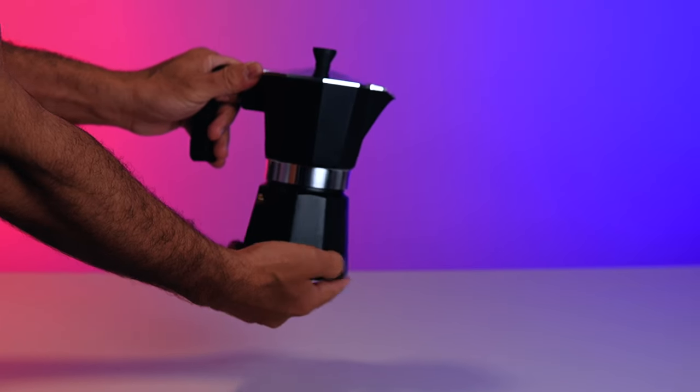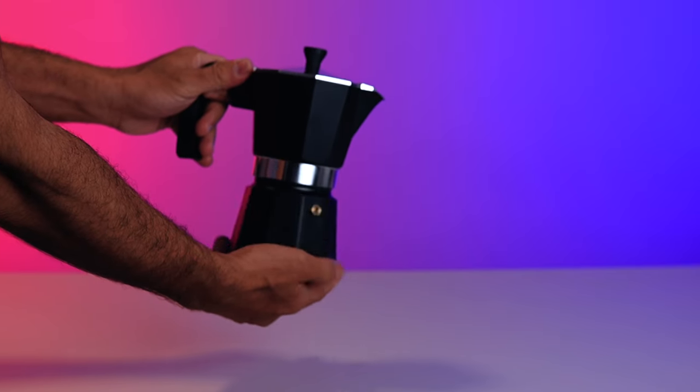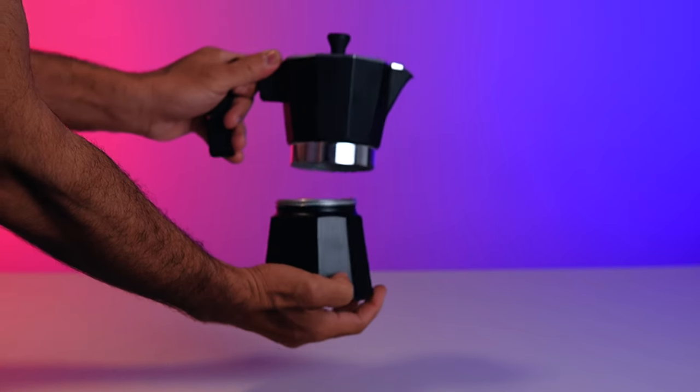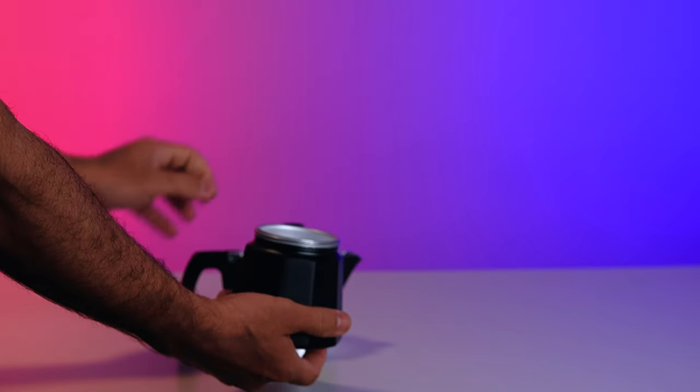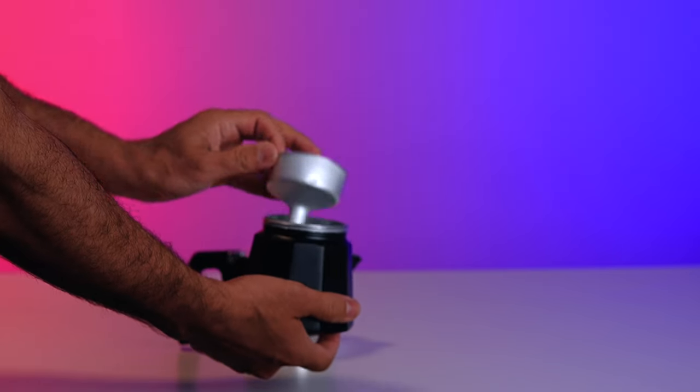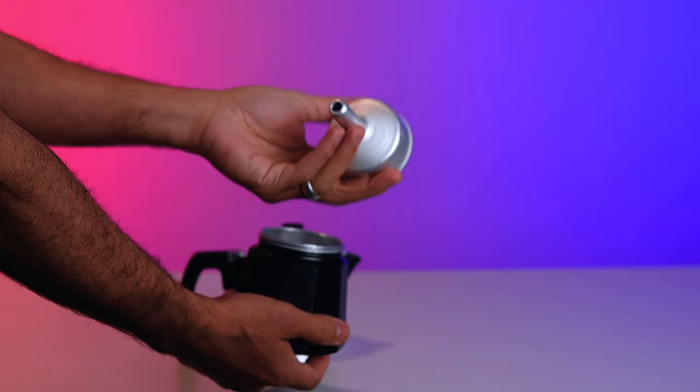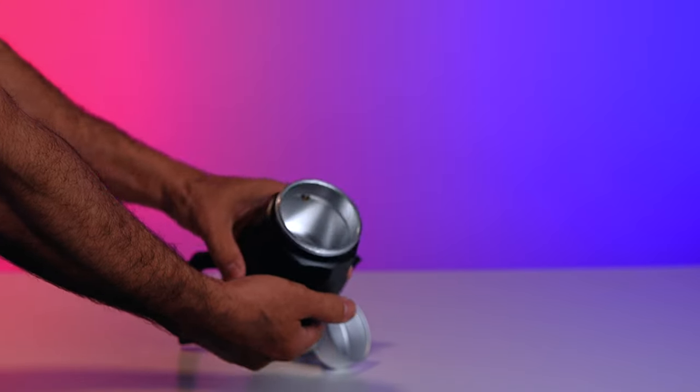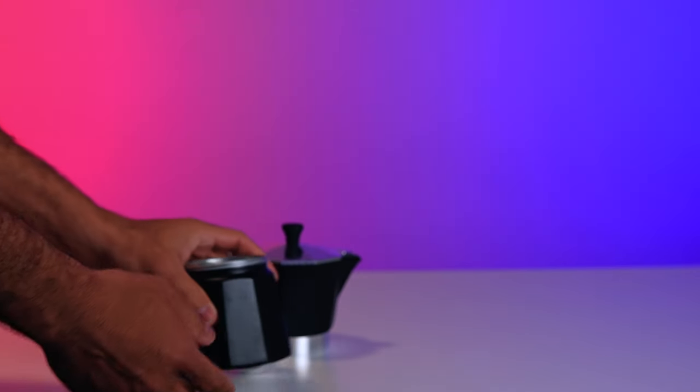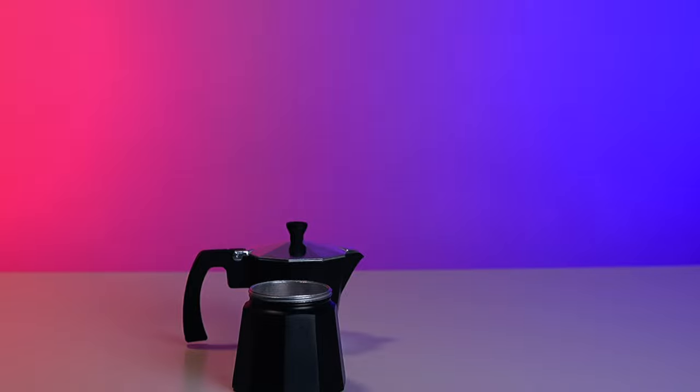But the Milano isn't just about looks, it's all about performance. With its high quality construction and premium materials, this espresso maker is built to last. The food grade anodized aluminum construction ensures durability and longevity, while the silicone gasket and Italian safety valve guarantee maximum safety during operation.